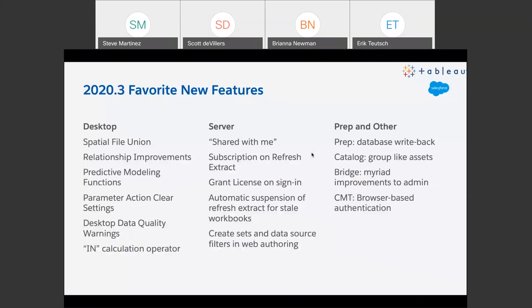For those of you who've watched Tableau's release cadence, especially since we moved to this quarterly cadence a few years ago, 2020.3 will look like a fairly typical release. We've rolled out a lot of new things, tweaked a few others, and generally given Tableau even more analytic goodness. This time around, we've added improvements to the relationships feature, enhancements to calculations, and continued to enhance the web authoring experience in Tableau Server. Some of that demos pretty well, while things like grant license on sign-in or improvements to Tableau Bridge maybe don't demo quite so much.